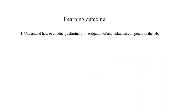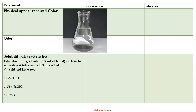After this video, you will be able to understand how we conduct a preliminary investigation of any unknown compound in the lab. Here I am showing you one image — a conical flask containing a sample. You can see the physical appearance and color of the sample. It is a colorless liquid.